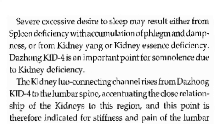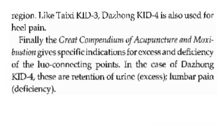The kidney Luo-connecting channel rises from Kidney 4 to the lumbar spine, accentuating the close relationship of the kidneys to this region. This point is therefore indicated for stiffness and pain of the lumbar region. Like Kidney 3, Kidney 4 is also used for heel pain. Finally, the Great Compendium of Acupuncture and Moxibustion gives specific indications for excess and deficiency: retention of urine for excess, and lumbar pain for deficiency.